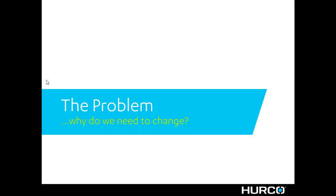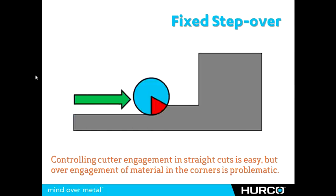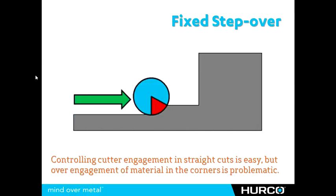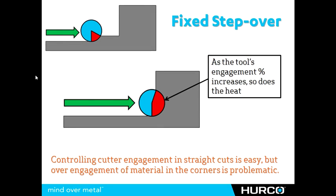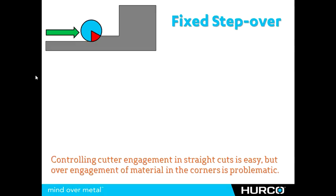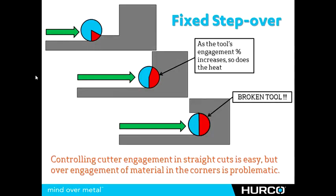Before we can talk about what Adaptive Path is and how it works, we need to discuss the problem and why we need something like this. When we're machining a part and we have a consistent straight cut, it's very easy for us to control the amount of material that the tool is going to engage, or the angle of engagement. However, as that tool reaches into corners or where it may encounter more material, heat is going to begin to build up.